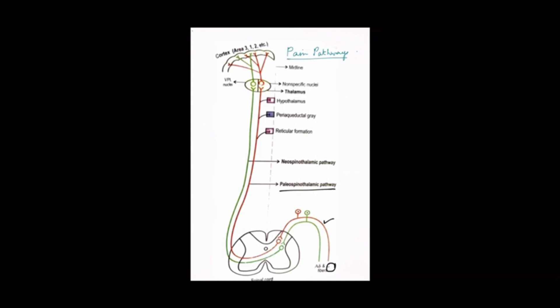First order neurons enter the spinal cord and terminate mainly in lamina 2 of the dorsal horn. Second order neurons decussate and ascend in the contralateral spinothalamic pathway. The fibers are more medially placed in the spinothalamic tract.